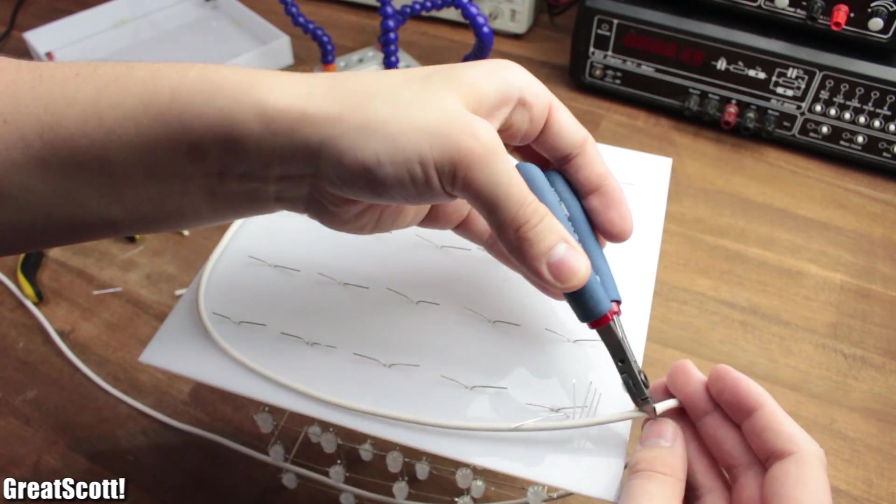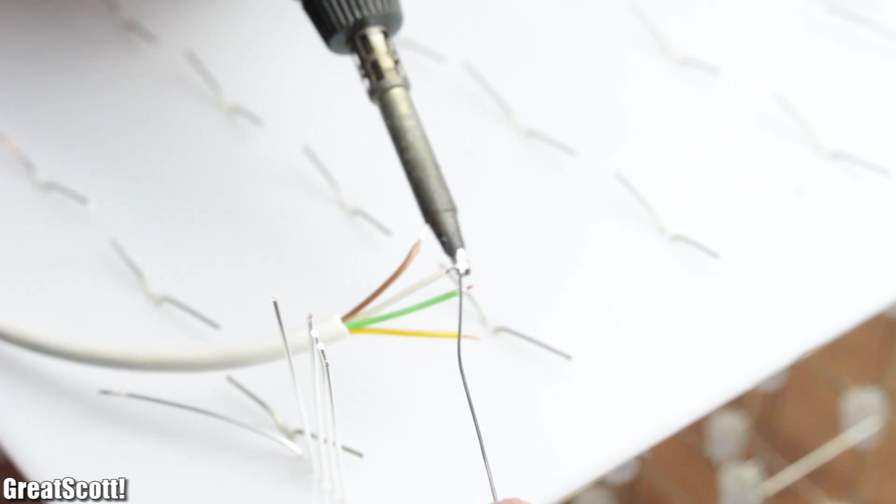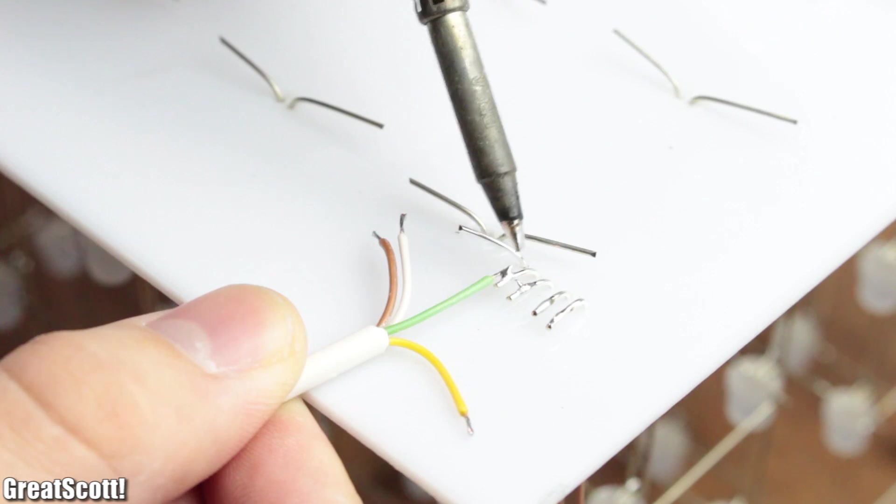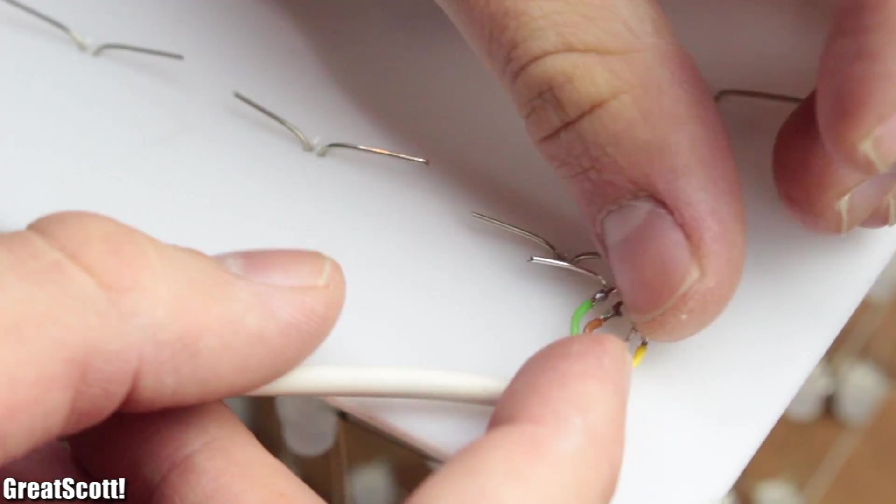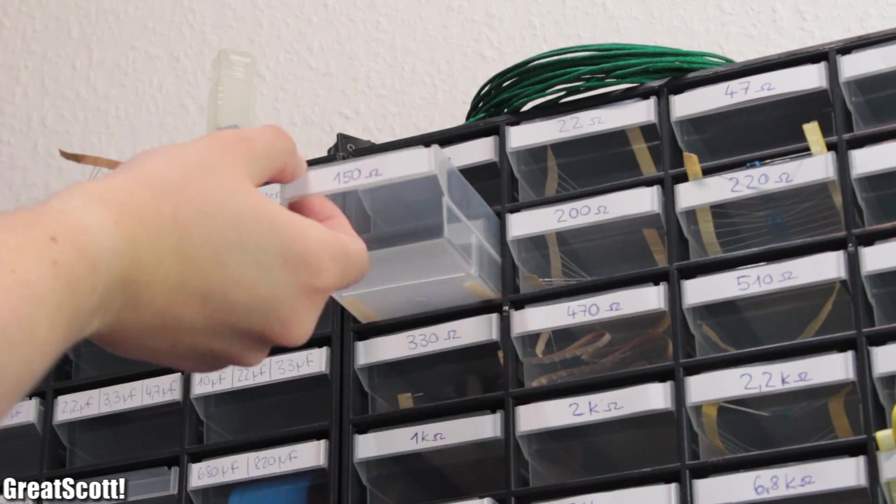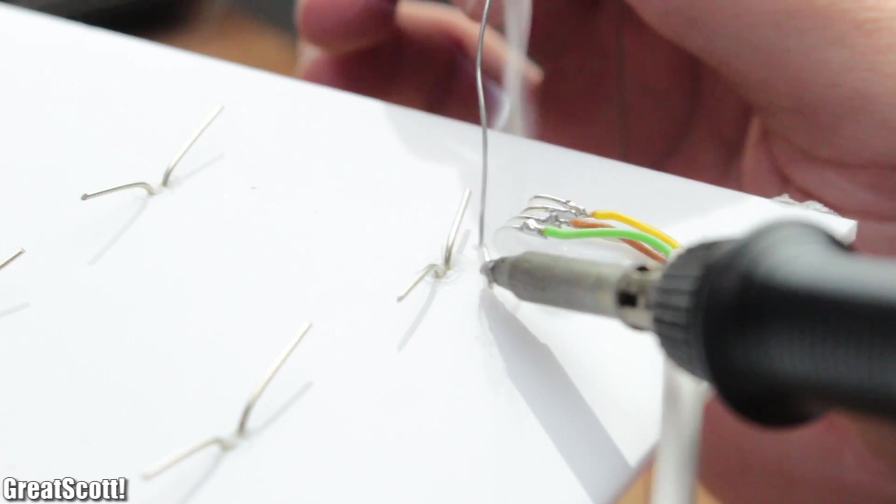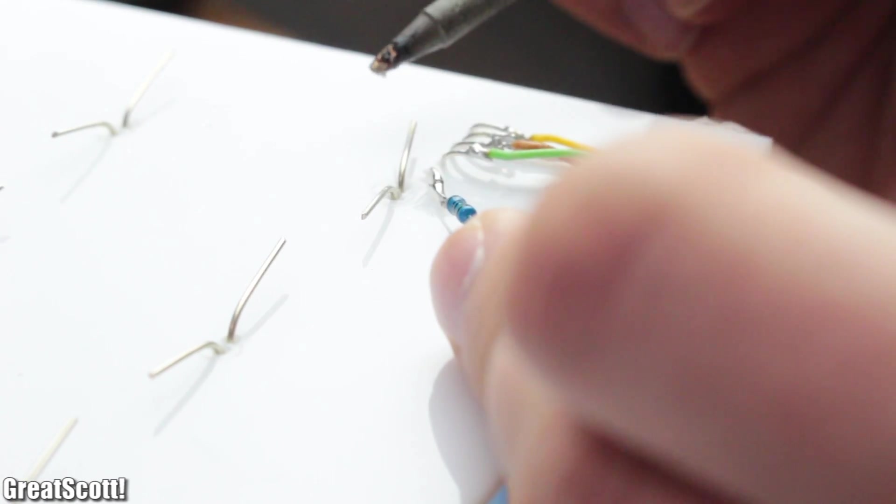Those need to be connected to the layer's data in, in a way that the first layer's data out connects to the second layer's data in, and so on. This only leaves the first data in behind, which only receives a 150 ohm resistor for now.